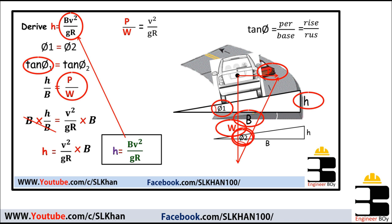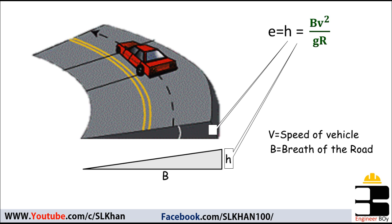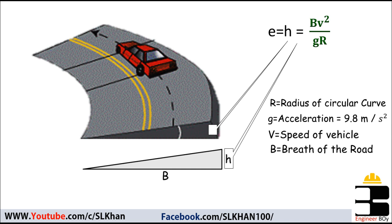In that formula, b is the breadth of the road or railway line, v is the speed of the vehicle, g is the acceleration due to gravity equals 9.8 m/s², and r is the radius of the curve.